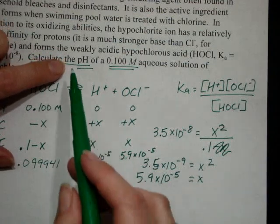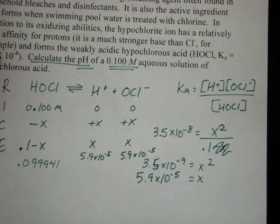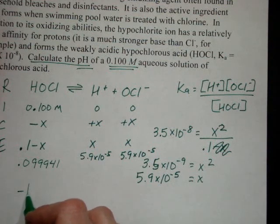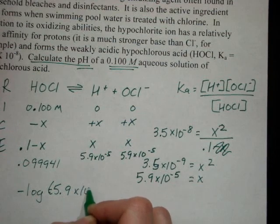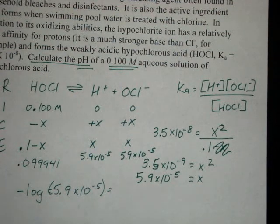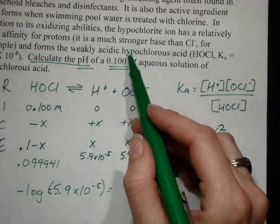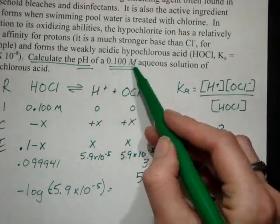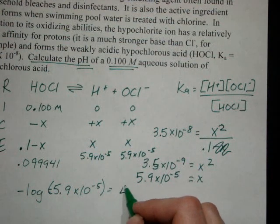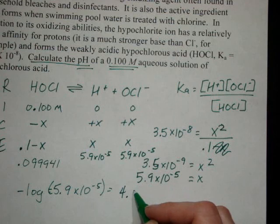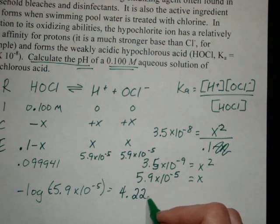Now what I want to find is the pH. Negative log of the hydrogen concentration is all I'm using. Using my significant figures according to my original concentration, I want 3 significant figures. So negative log of 5.9×10⁻⁵ equals 4.22914, or 4.229.